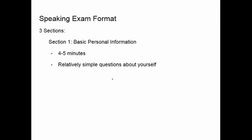There are three sections to the speaking test. Section one is the easiest part — the questions are just about basic personal information: your family, hometown, hobbies or academic interests, places you've traveled. This part lasts four to five minutes, and you should think about it as kind of a warm-up section for parts two and three, which get more challenging.